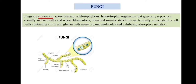Fungi are eukaryotic organisms, meaning they contain a well-developed nucleus, a nuclear membrane, and also have membrane-bound organelles. They are spore-bearing, meaning they can produce both sexual and asexual spores. Fungi are achlorophyllous in nature, meaning they do not contain any type of chlorophyll. Fungus is a heterotrophic organism, meaning it depends on other organisms for its food and survival. The somatic structures are typically surrounded by a cell wall which contains chitin and glucan.